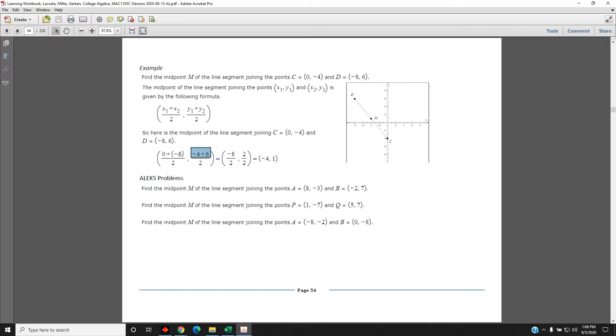So, 0 plus negative 8 is negative 8. Negative 8 divided by 2 is negative 4. Negative 4 plus 6 is positive 2. That has to be divided by 2. 2 divided by 2 is 1. So, the midpoint has coordinates negative 4, comma 1.